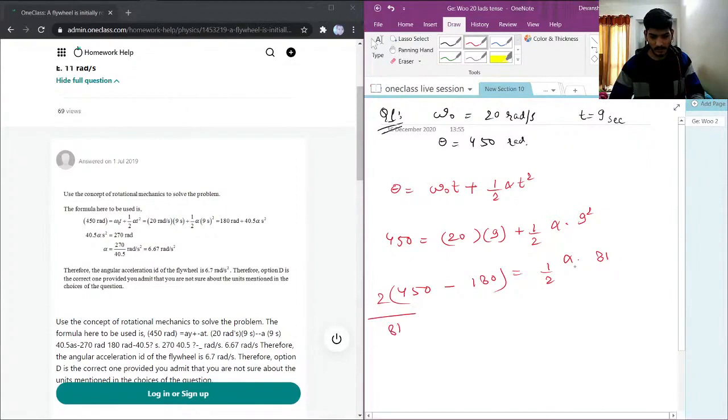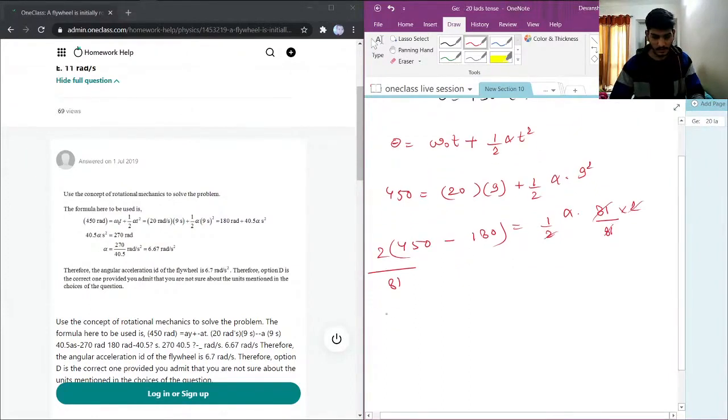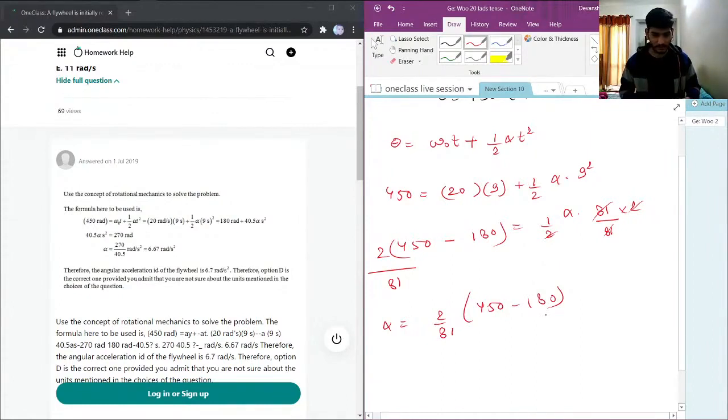So we have 270 = ½α×81. Therefore α = 2×270/81. Let me use my calculator for this. This will be 540 divided by 81. We have 6.666, so this will be approximately 6.67 radians per second squared.